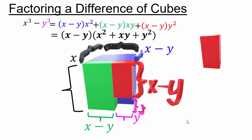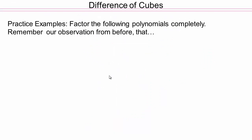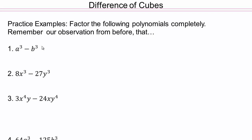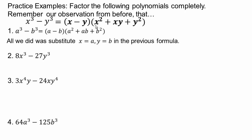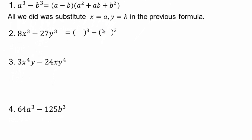Now let's take some examples. The difference of cubes formula is: a³ − b³ = (a − b)(a² + ab + b²), substituting a for x and b for y. Anytime you are factoring, the first step is always to see if you can factor out the greatest common factor. Once you've done that, if it's a difference of cubes, apply the formula and fill in the blanks.